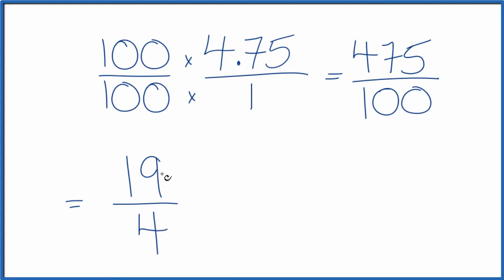This is an improper fraction. 19 is larger than 4. So let's reduce it to a mixed fraction. So 4 goes into 19 four times, because 4 times 4, that's 16, with 3 left over. So we'll call this 4 and 3 fourths. So this is our mixed fraction.